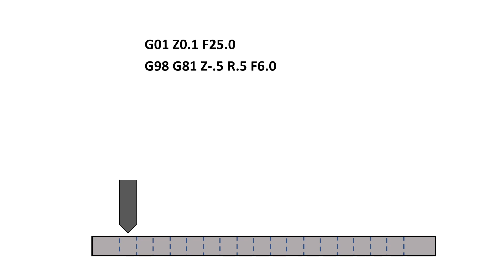G98 tells the machine to return to the initial plane once the CAN cycle is over. G81 calls up the CAN drilling cycle. Z negative 0.5 is the required depth of the finished hole. R0.5 is the retract position — this is where the tool returns to during the cutting cycle while the tool moves from one location to the next. F6.0 is the feed rate at which to cut the hole.